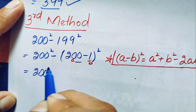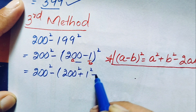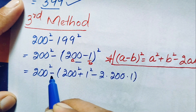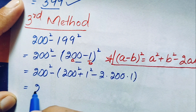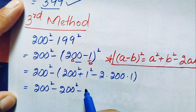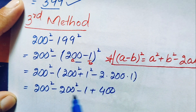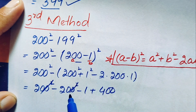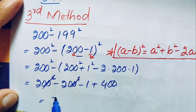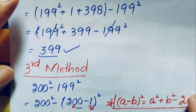Using this identity, where a is 200 and b is 1, this becomes 200 squared minus (200 squared plus 1 squared minus 2 times 200 times 1). Multiplying the negative sign inside: 200 squared minus 200 squared minus 1 plus 400. The 200 squared terms cancel, leaving 400 minus 1, which equals 399. So 399 is our answer using the third method.